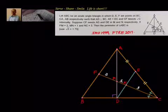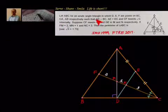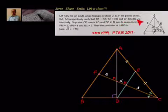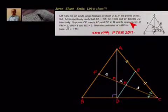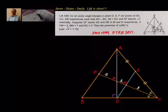We have been given that ABC is an acute triangle in which D, E, F are points on BC, CA, AB respectively, such that AD is perpendicular to BC, AE equal to EC, and CF bisects angle C internally. Suppose CF meets AD and DE in M and N respectively. If FM equal to 2, MN equal to 1 and NC equal to 3, then the perimeter of triangle ABC is equal to how much?